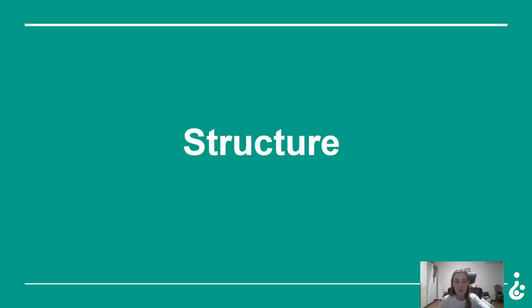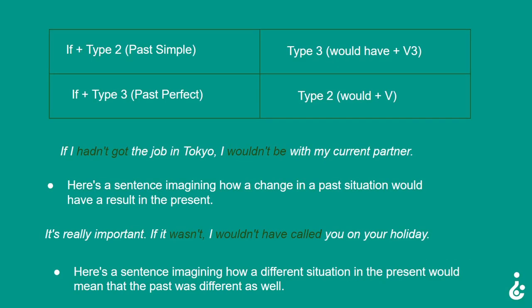Now let's talk about structure. First, we have: if + type 2 (past simple) and type 3 (would have + verb 3); and if + type 3 (past perfect) and type 2 (would + verb).